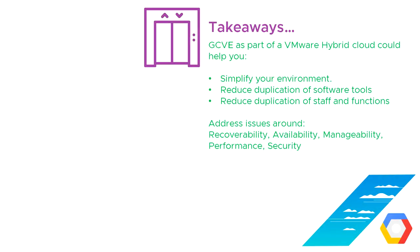So that's the end of this video. The key takeaways are that Google Cloud VMware Engine, as part of a VMware hybrid cloud, could help you simplify your environment rather than make it worse. It could reduce duplication of software, tools, staff, and functions. When looking at something that fundamentally changes your applications or platform, consider recoverability, availability, manageability, performance, and security — what a VMware certified design expert would refer to as RAMPS. That was 102: What problems does it solve? In the next video, 103, we'll be talking about the benefits you could gain from moving to a hybrid cloud on Google Cloud VMware Engine. Thank you very much for your time.